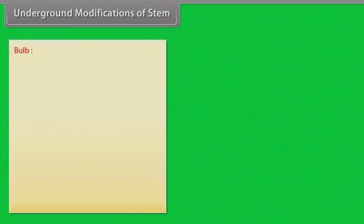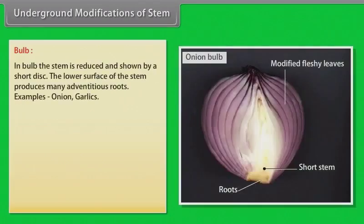The eyes of potato are capable of producing new plants by vegetative propagation. Example: potato. In bulb, the stem is reduced and shown by a short disc. The lower surface of the stem produces many adventitious roots. Examples: onion, garlic.